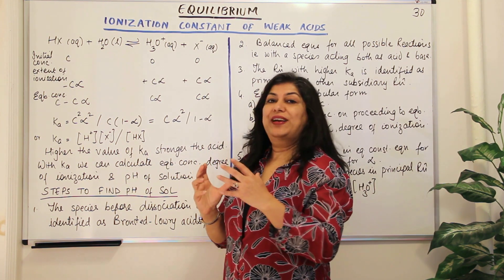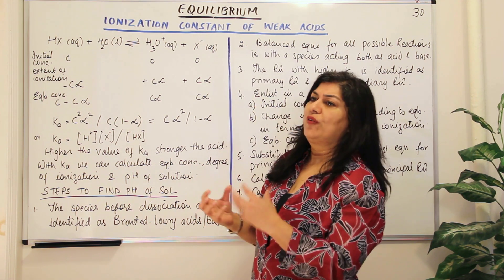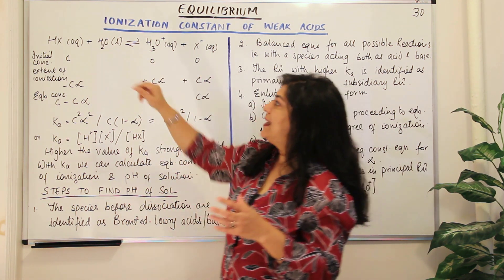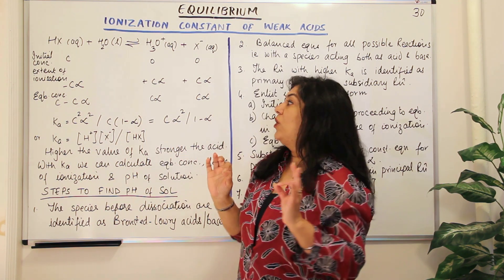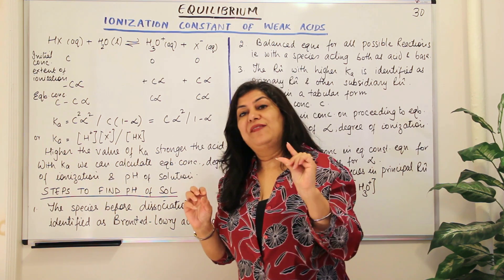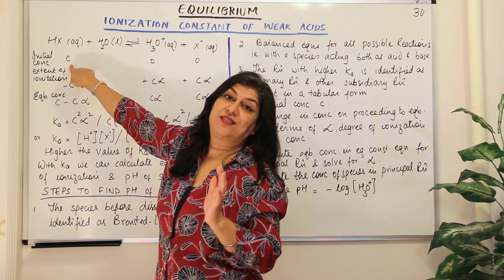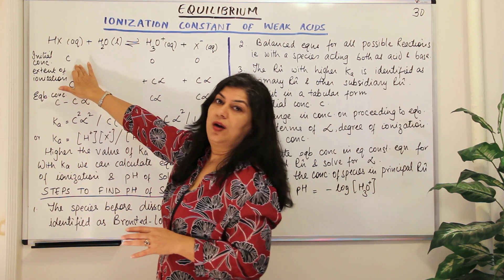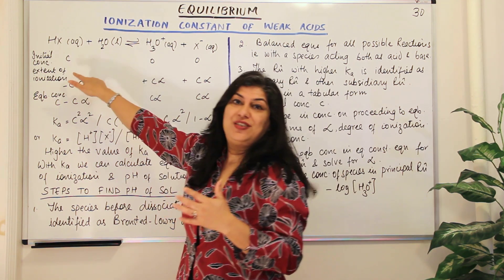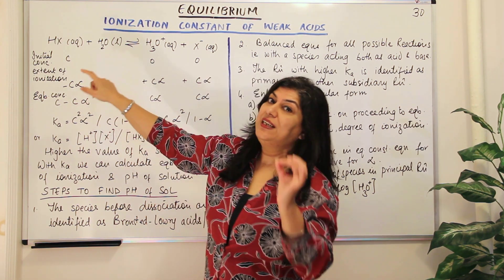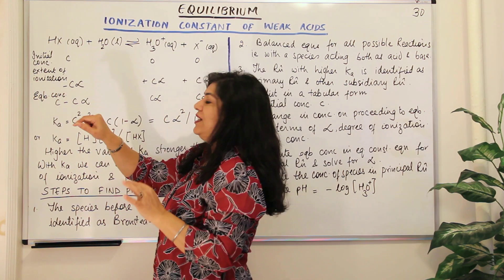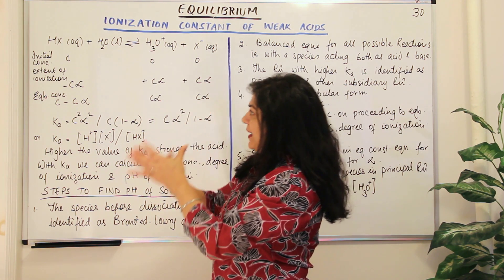Then we talk of an extent of dissociation. Let us assume alpha is the degree of dissociation. If the ionization took place by a degree of alpha, that alpha is a degree of the initial concentration. For example, if I started with 100 moles per liter, alpha would represent the fraction that dissociated — say half of 100. So C×alpha is the extent of ionization that took place.